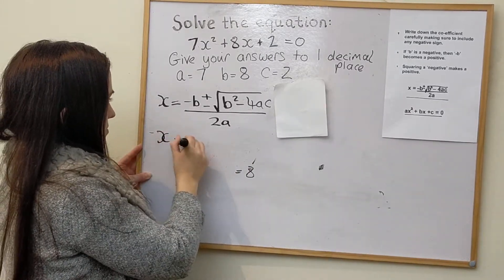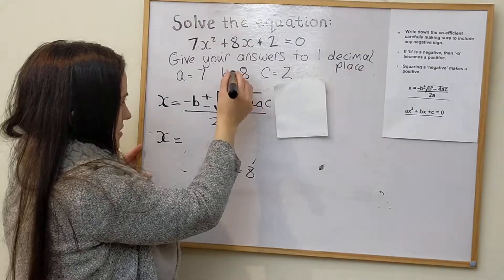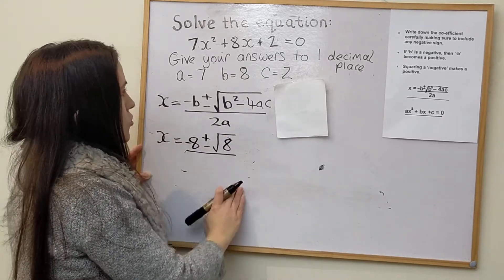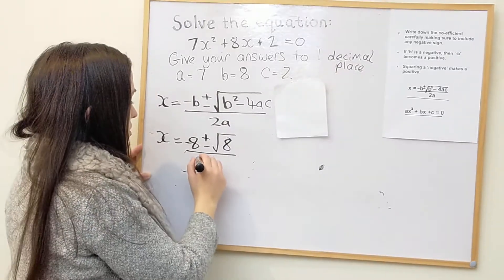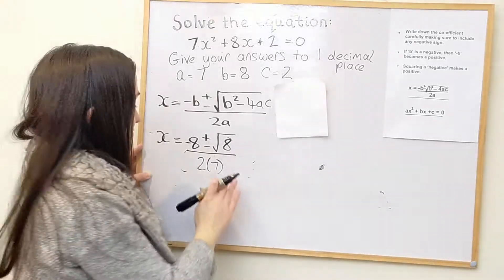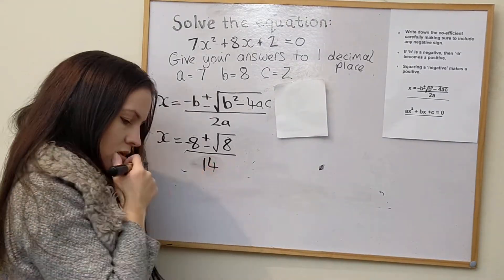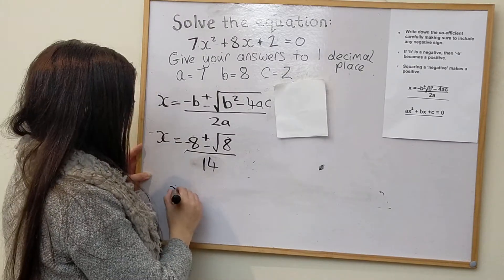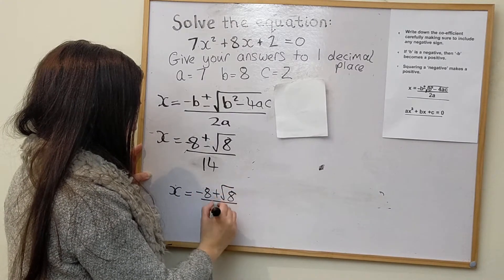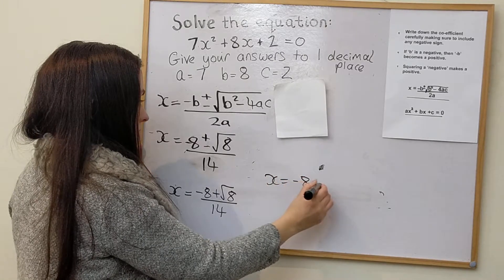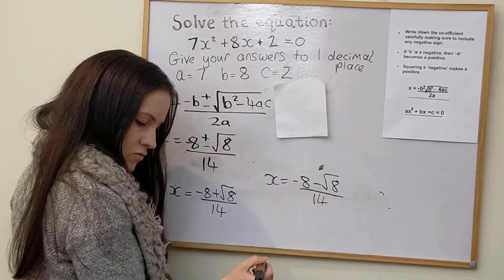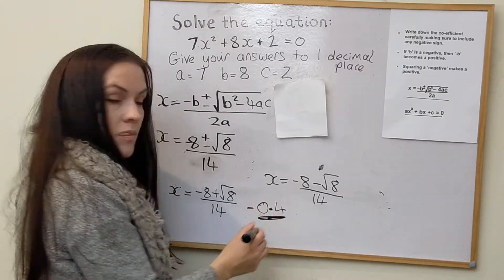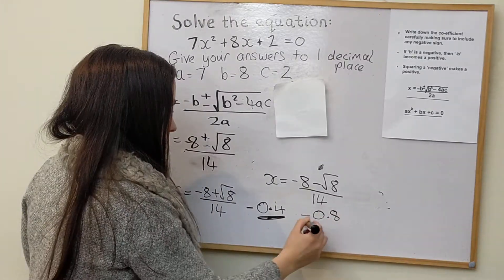So x equals negative 8 — since b is positive, negative b is just negative 8 — plus or minus root 8, all over 2a, which is 2 times 7, so 14. That gives us two separate answers: negative 8 plus root 8 over 14 gives minus 0.4, and negative 8 minus root 8 over 14 gives minus 0.8.